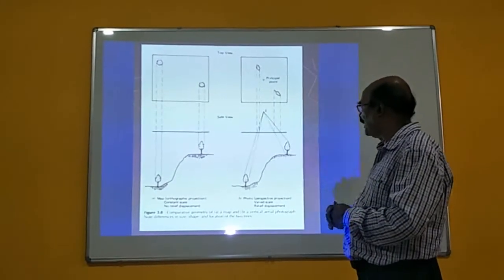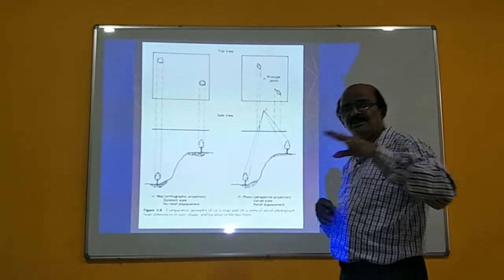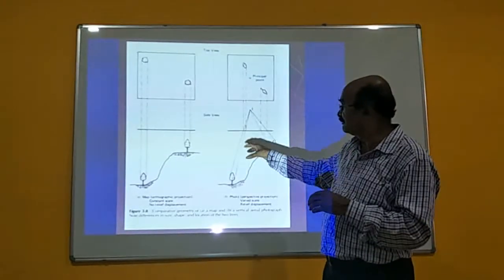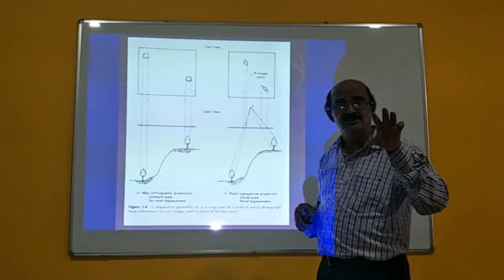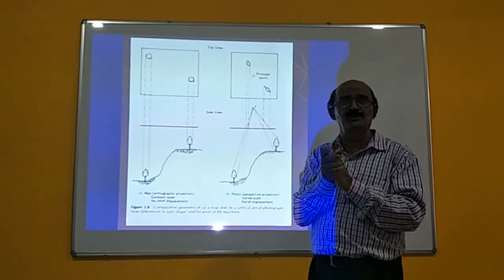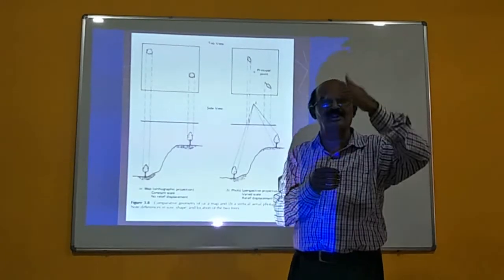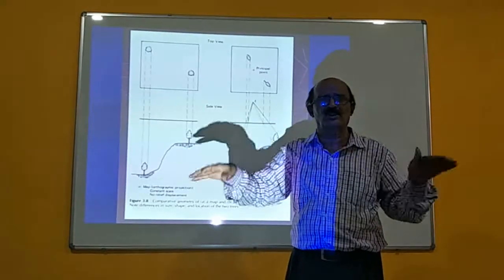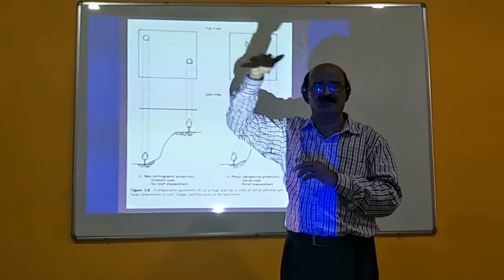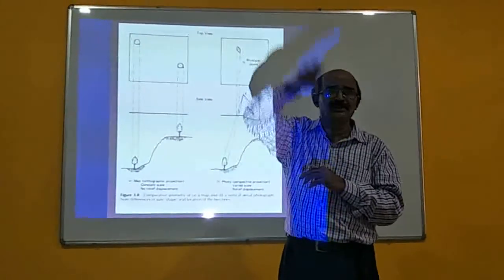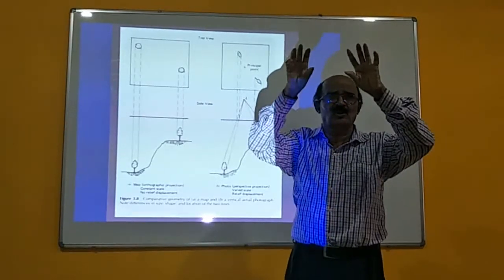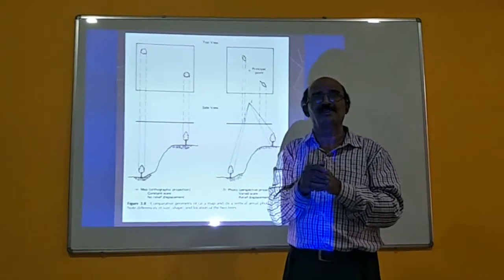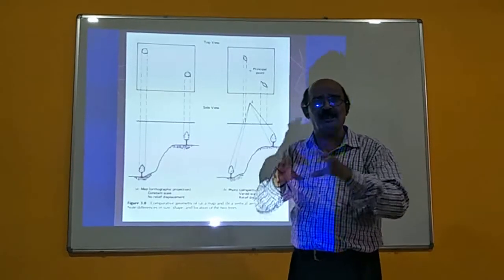There is a difference between a topographical map and aerial photographs. Topographical maps are derived from 3D aerial photographs. In aerial photography, the scale will not be uniform because scale equals focal length divided by flying height. Since terrain is undulatory, flying height varies, causing scale variation from point to point. But in topographical maps, the scale is uniform throughout.